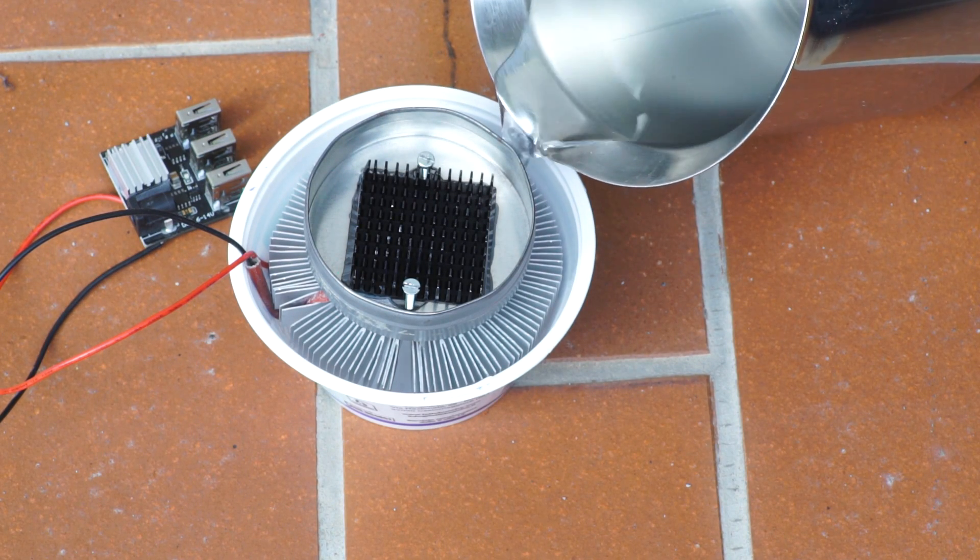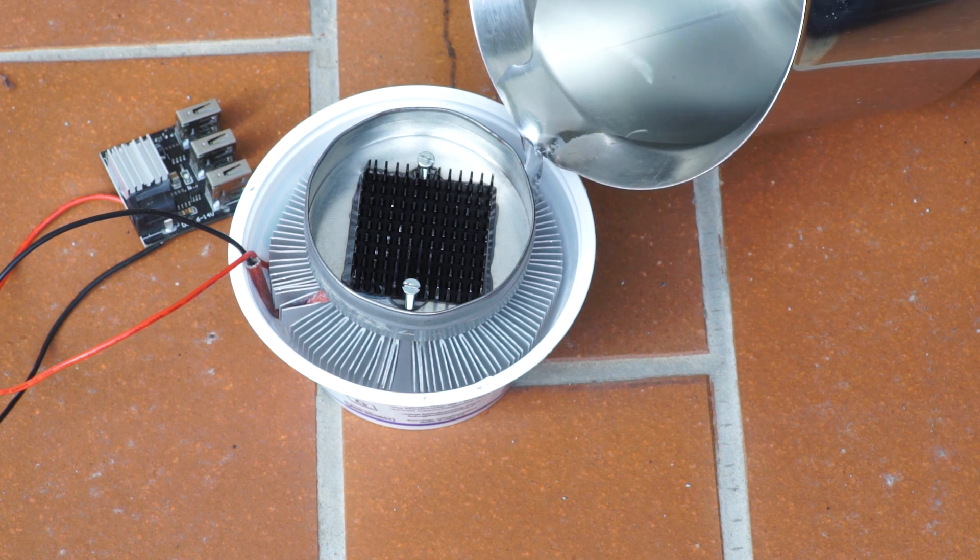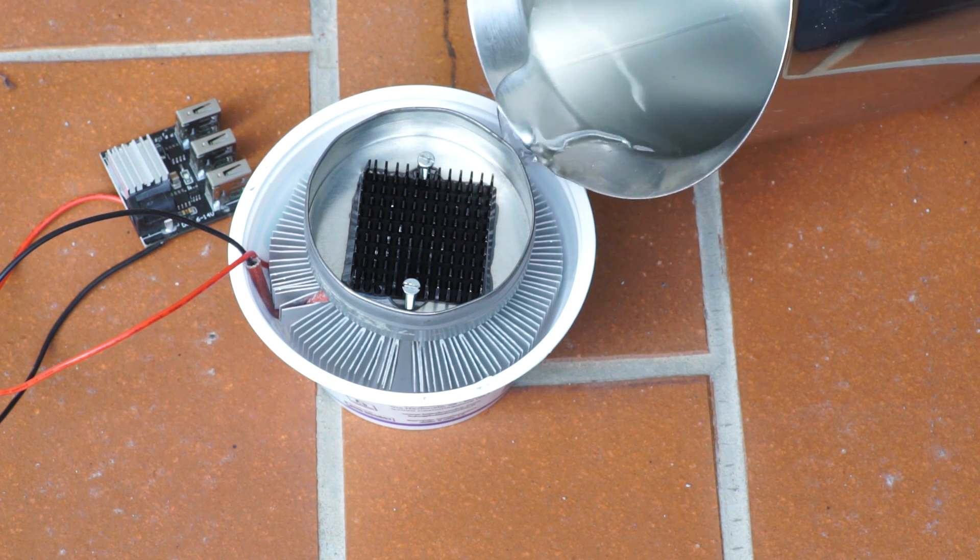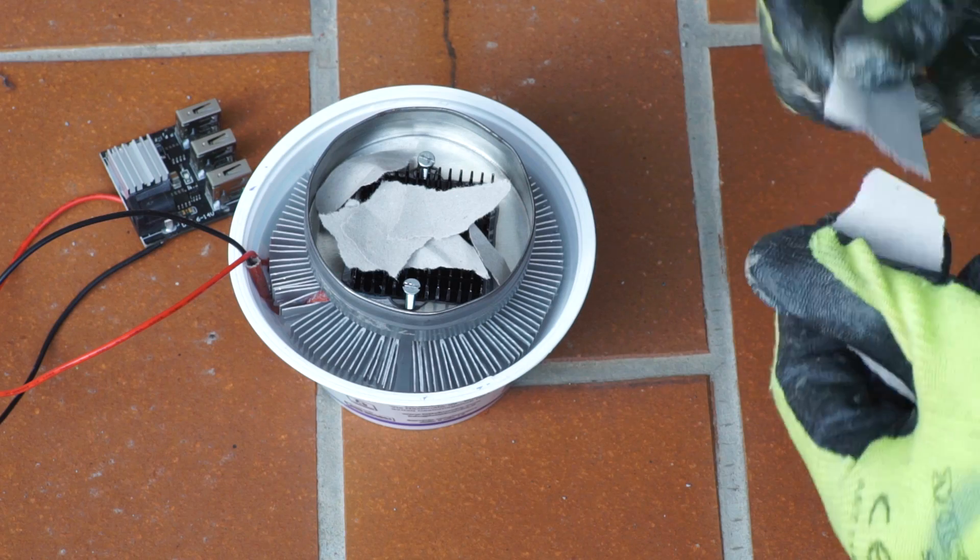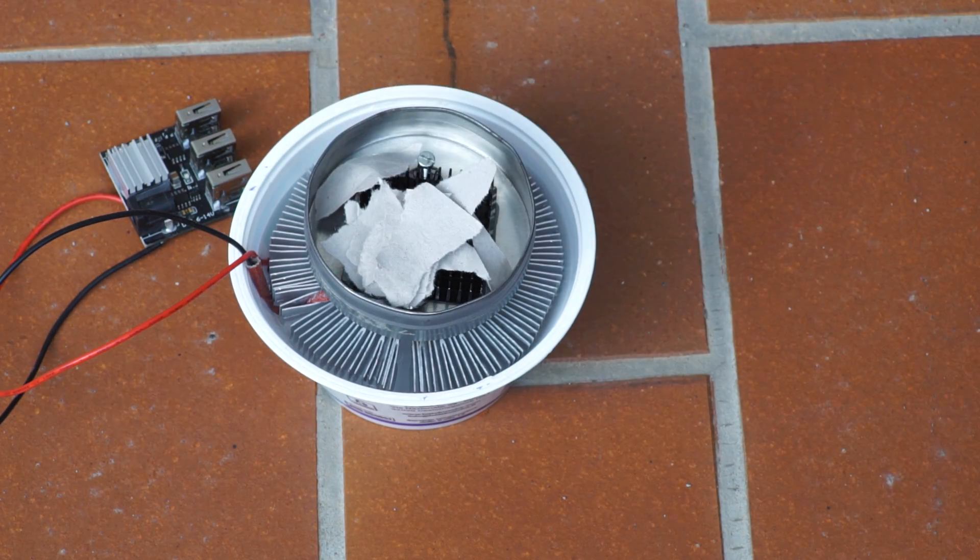Pour the water so that it reaches the level without wetting the Peltier cell. Once you have done that you can try to start a fire on the top container using some papers, some cardboard and even some wood.